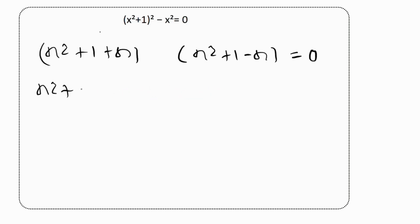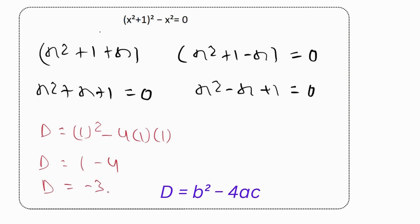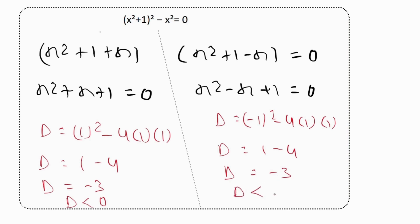For x² + x + 1 = 0, the discriminant D = 1² - 4(1)(1) = 1 - 4 = minus 3, so D < 0, meaning no real roots. For x² - x + 1 = 0, D = (-1)² - 4(1)(1) = 1 - 4 = minus 3, again D < 0. Since both factors yield no real roots, the equation has no real roots.